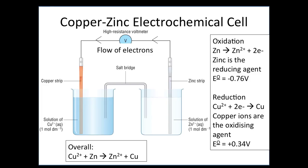In the slide shown, copper and zinc half cells are connected to form an electrochemical cell. Zinc has a standard electrode potential of minus 0.76 volts and therefore has a greater tendency to lose electrons, acting as the reducing agent and donating electrons. Copper has a standard electrode potential of plus 0.34 volts, so electrons flow from the zinc half cell to the copper half cell which accepts them. The voltage measures the standard cell potential for that cell.